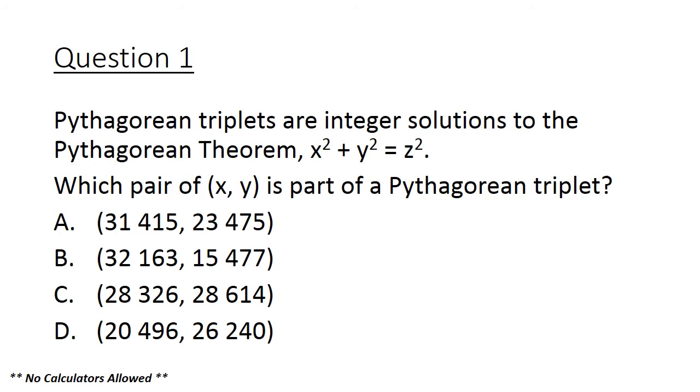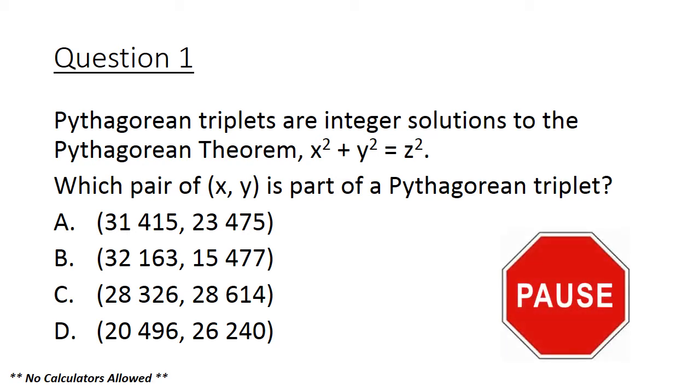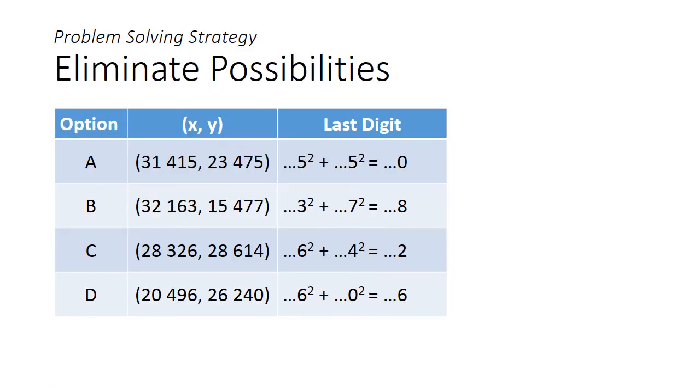Let's now look at a question on Pythagorean triplets. Pythagorean triplets are integer solutions to Pythagoras theorem: x squared plus y squared equals z squared. In this multiple choice question, we have to identify the Pythagorean triplet among the options. Pause the video here and give this question a good attempt.